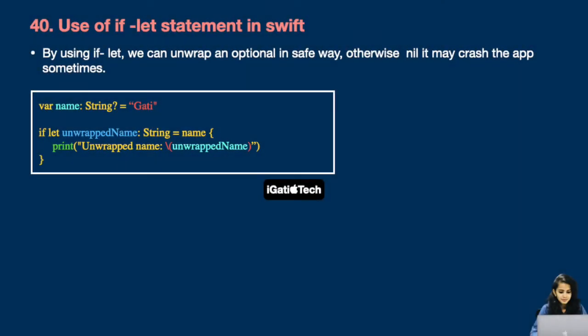Next question: use of if let statement in Swift. By using if let, we can unwrap an optional in a safe way — otherwise, if it is nil, it may crash the app. In the example, I've written an if let condition for 'name', which is an optional variable. I'm unwrapping it safely, so if 'name' is nil, the application will not crash — it simply won't enter the if block.